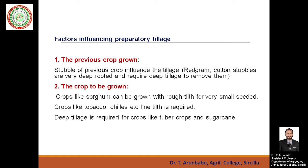Coming to factors influencing preparatory tillage: the first factor is the previous crop grown. The stubbles left in the field from the previous crop influence the tillage required. For example, red gram and cotton stubbles are very deep-rooted, so deep tillage is required to remove them. The second factor is the crop to be grown — crops like sorghum can be grown with rough tilth, while small-seeded crops like tobacco and chillies require fine tilth, and deep tillage is required for tuber crops and sugarcane.